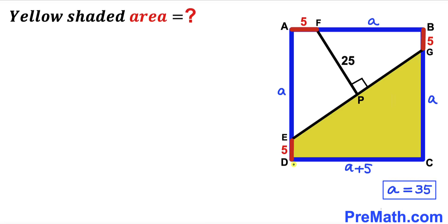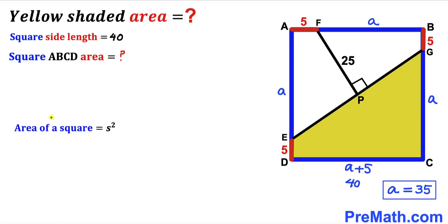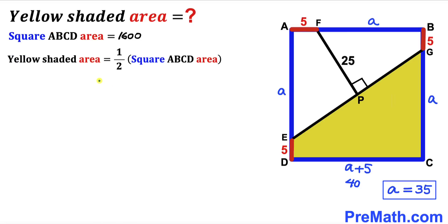We know the side length of the square is a + 5, and a = 35, so the side length is 40 units. We conclude that the side length of square ABCD is 40 units. Now we calculate the area of square ABCD using the formula: area = s², where s is the side length. With s = 40, the area is 40² = 1600 square units.